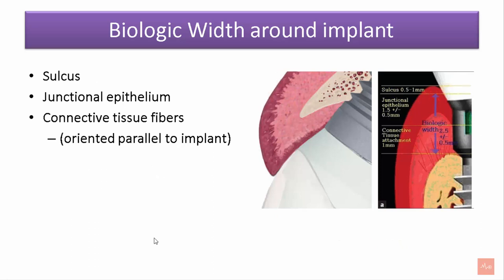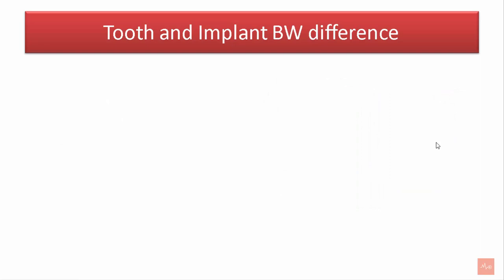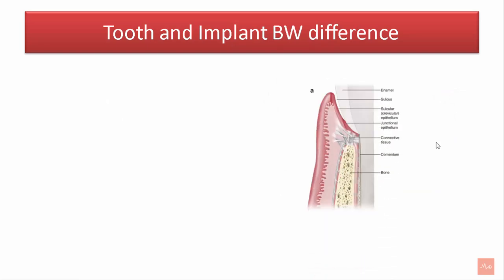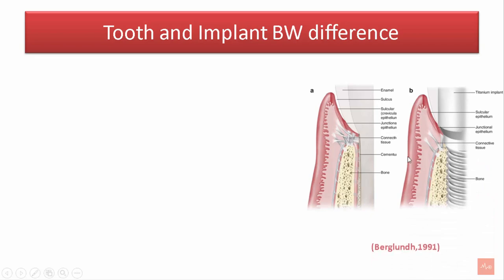Similar to the tooth, biological width also exists around dental implants. It consists of a sulcus, a junctional epithelium, and connective tissue fibers. These connective tissue fibers are oriented parallel to the implant, as opposed to those around a tooth which are oriented perpendicularly. This is the diagrammatic representation of the epithelial attachment and connective tissue attachment around a tooth, and this represents the epithelial and connective tissue attachment around a dental implant.